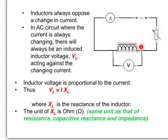The inductor voltage is proportional to the current. The bigger the current, the bigger the inductor voltage. So the equation is inductor voltage equal to current times the reactance of the inductor. The unit of reactance of the inductor is ohms, same unit as that of resistance, capacitive reactance, and impedance.